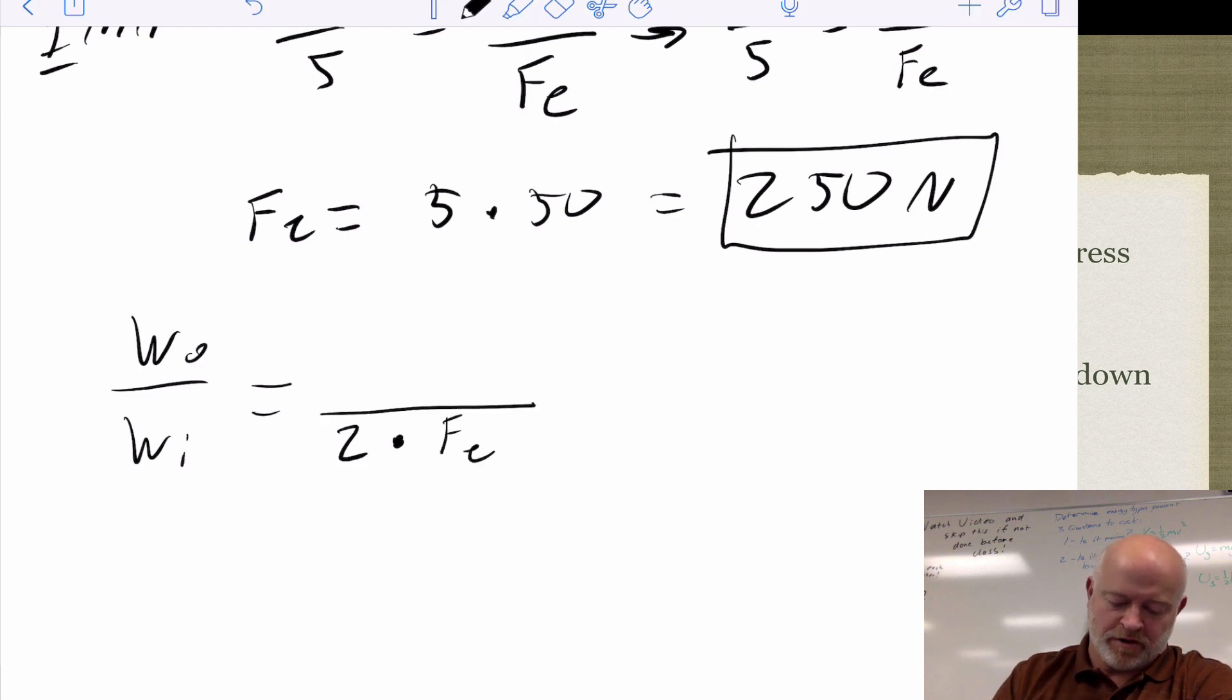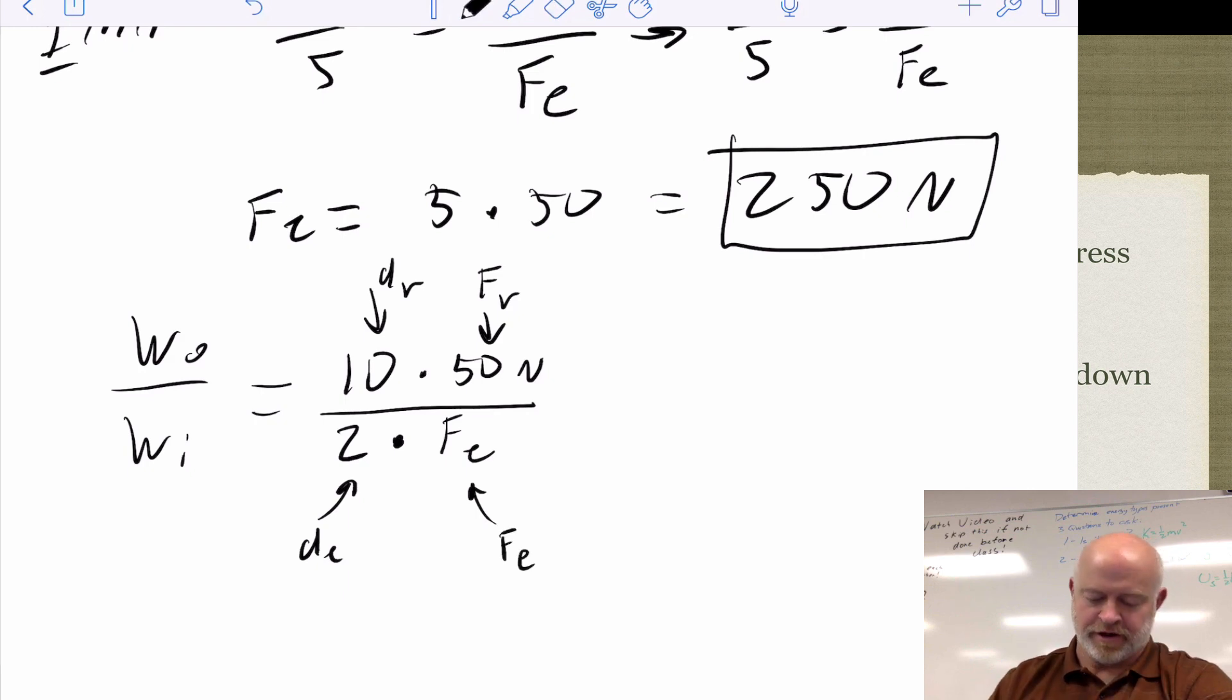And the output we got, well, it went 10 meters distance, and we are raising a 50-newton container. So this is the height or our distance effort. This is, sorry, not effort. I apologize. This is our distance of resistance. This is our force of resistance right here. These we know. We know that the distance of our effort was 2, so we're solving for the force of our effort right here.